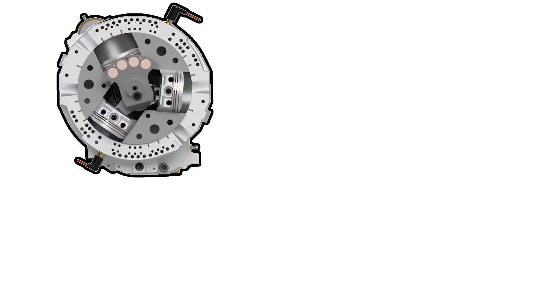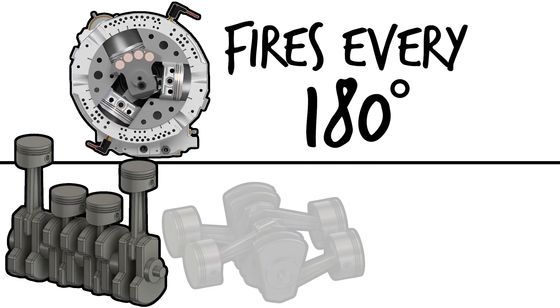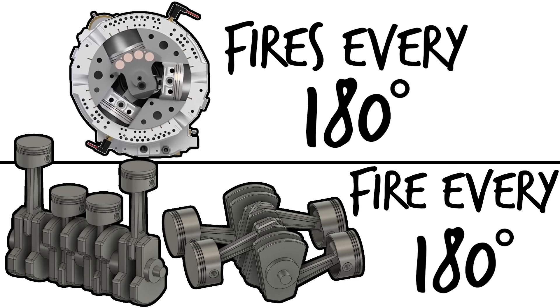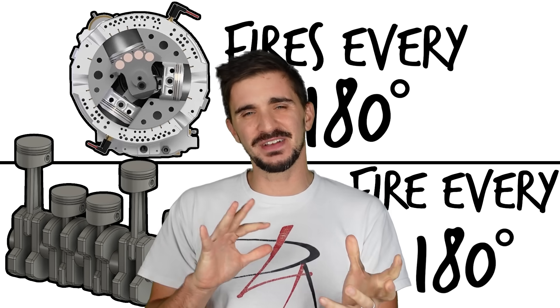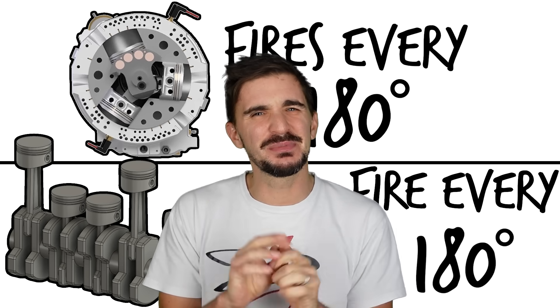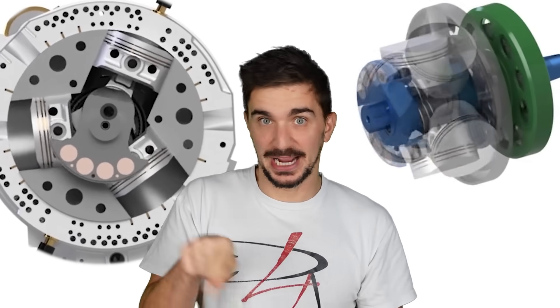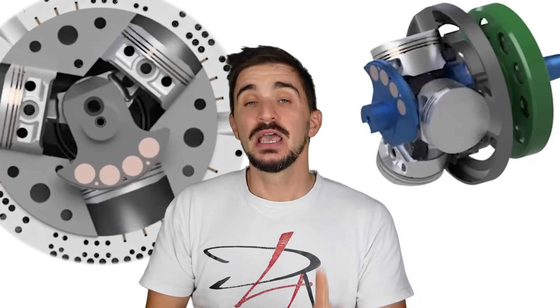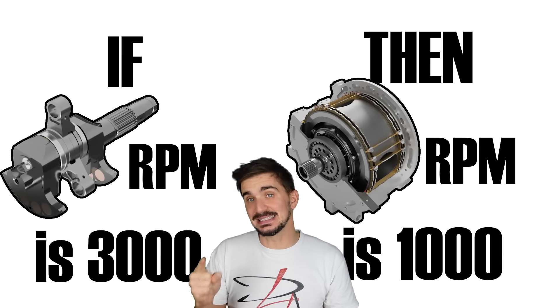The bi-rotary engine fires every 180 degrees of crankshaft rotation. This means that it fires as often as an inline-four or boxer-four conventional engine, which is an impressive feat considering that it has one cylinder less. However, comparing the firing intervals like this with conventional engines paints a bit of an incomplete picture. Remember, in the bi-rotary, both the crankshaft and the cylinder block rotate.